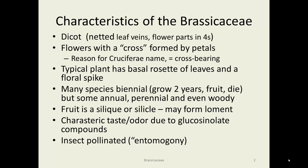Characteristics: it's a dicot, so we look for those netted leaf veins and the flower parts are in fours. Flowers are distinctive with the petals forming a sort of a cross, which was the basis for the Cruciferae name — it was supposed to be cross-bearing. A typical plant has a basal rosette, which means a bunch of leaves down close to the ground, and then when it blooms it puts up a flower spike. Many of these are biennials, growing the first year and then putting up that stalk and blooming the second year. So if you think of your broccoli or cabbage, that's what they're planning to do. We tend to harvest them before they actually get around to doing it.